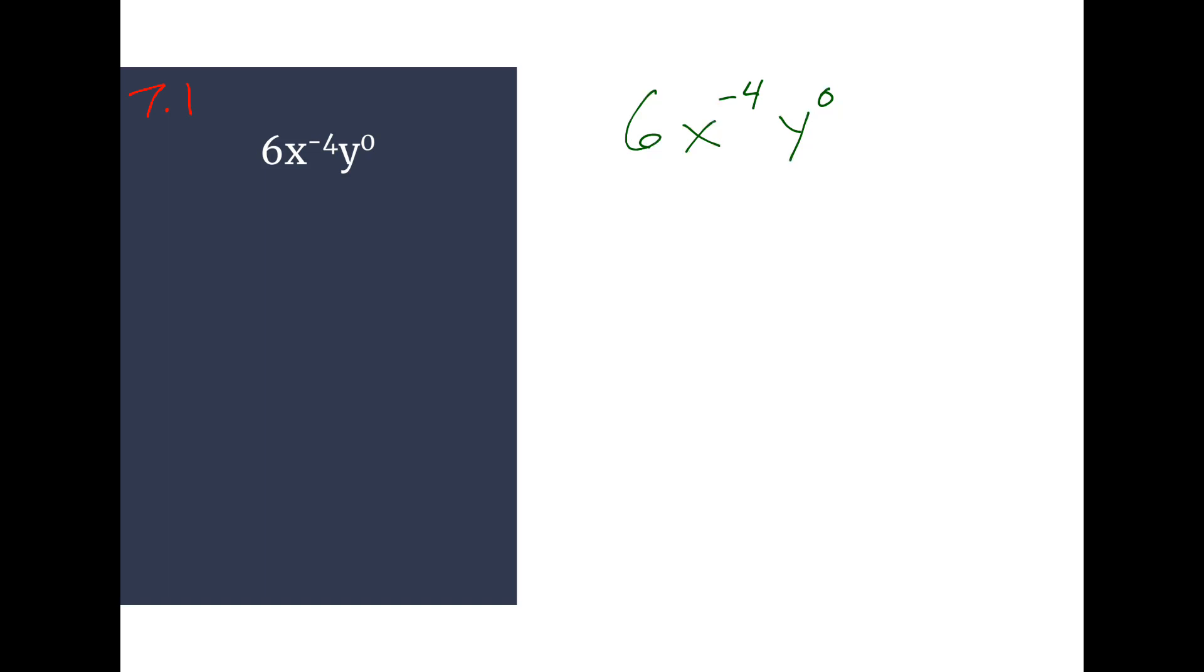So the first thing we have to see is what is actually the basis of the exponents. So for negative 4, my base is x. It's only attached to the x. It's not also attached to the 6. If it was attached to the 6, then it would have the parenthesis around it and look like that.